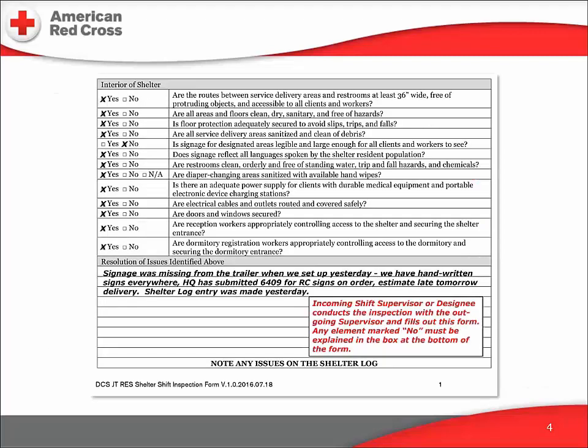This is the bottom half of the shelter shift inspection form. It contains another 13 more specific items about the interior of the shelter space. Again, yes, no, or not applicable are the answers. At the bottom is a box for notes and explanations for all no responses to any question on the whole page, top half or bottom half. Remember: if an item is serious enough to be entered in the shift inspection log, it's important enough to bring to the attention of the shelter manager, who will in all probability discuss it with the HQ sheltering manager. This form is filed in the shelter logbook and kept in the shelter office.